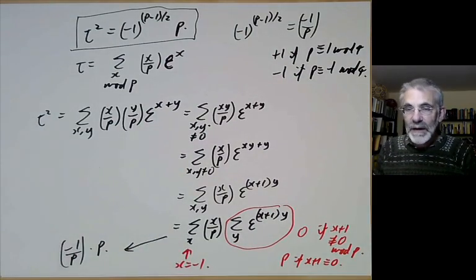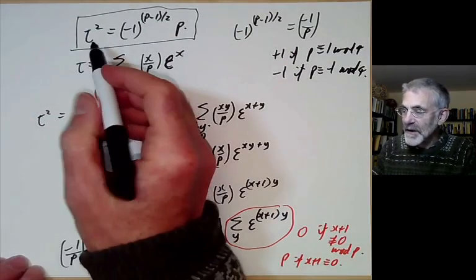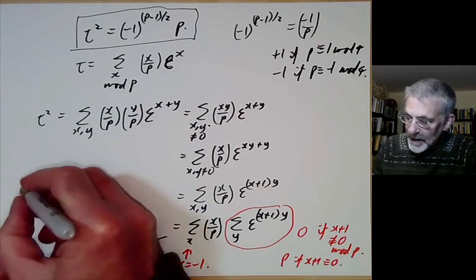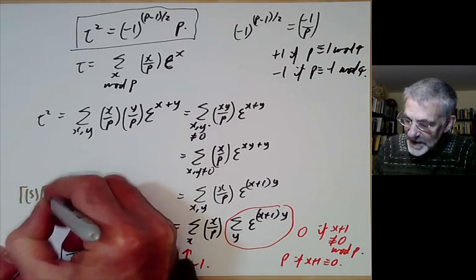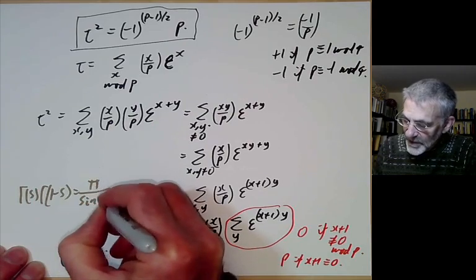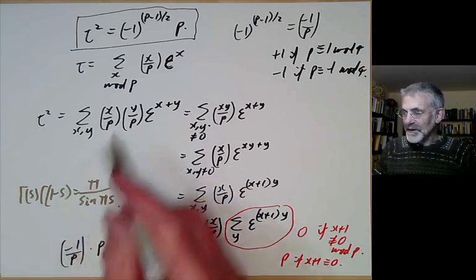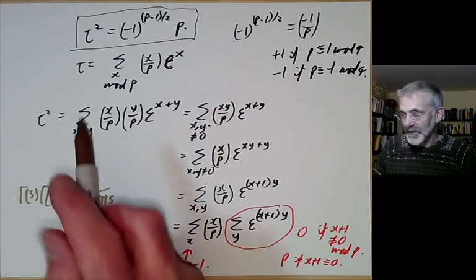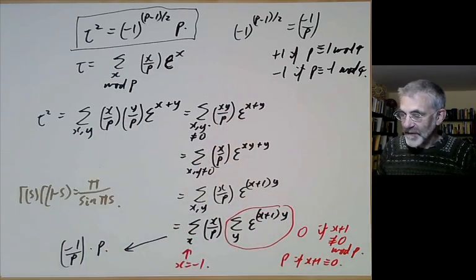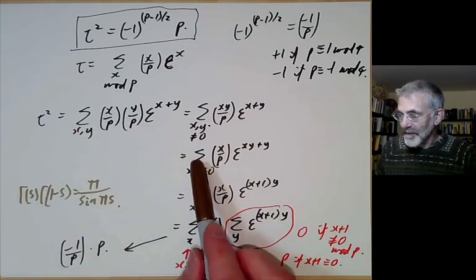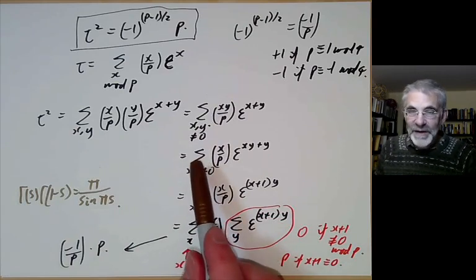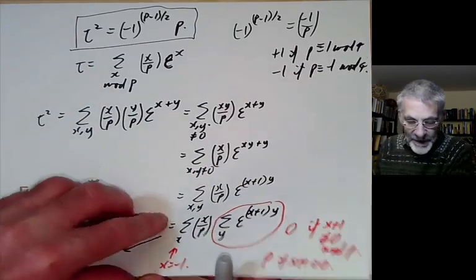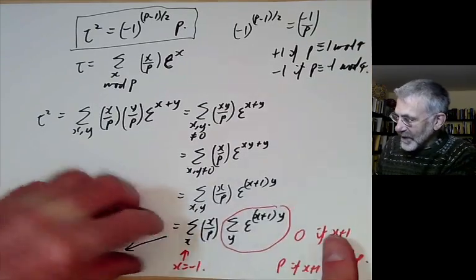Gauss sums are related to the gamma function, and there's an analogous property: Γ(s) · Γ(1−s) = π / sin(πs). This doesn't look like the Gauss sum relation, but the proof is very similar — instead of making a change of variable in a double sum, you make a similar change of variable in a double integral. Anyway, that's the first property we need for Gauss sums.